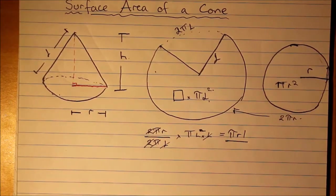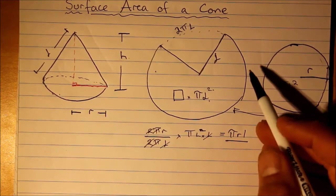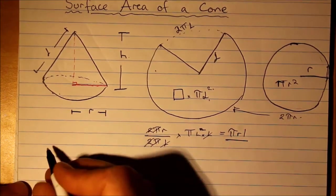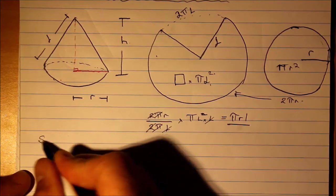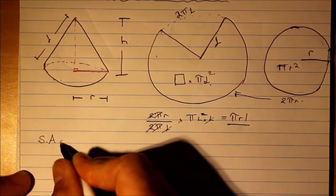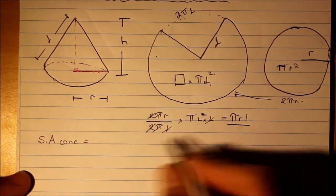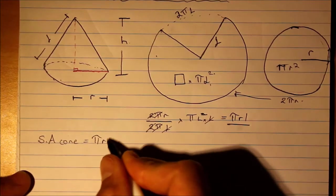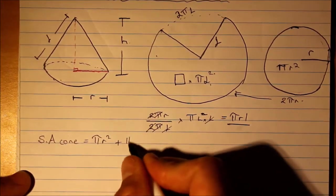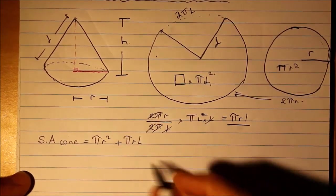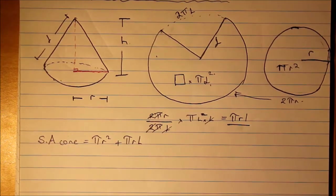Or you could then write it as the surface area of a cone is equal to the circular base πr² plus πrl, the side sector.